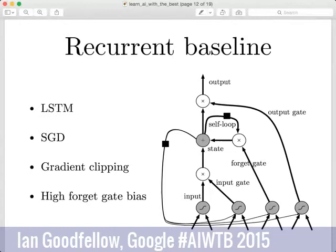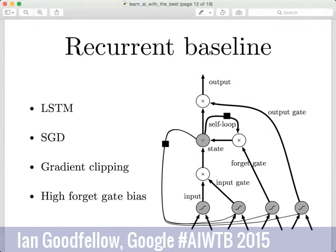I recommend the LSTM as the default model when tackling a complicated AI-complete sequence modeling task. One thing that's really important when training any kind of recurrent network is to apply gradient clipping — during backpropagation, as the gradient flows backward through the network, you impose some maximum size on it, and if the true gradient exceeds that size you clip it to be smaller. The reason is that propagating backward through several hundred steps in an LSTM can make the gradient become quite large, and a very large gradient can do a lot of damage if you take a gigantic gradient step.